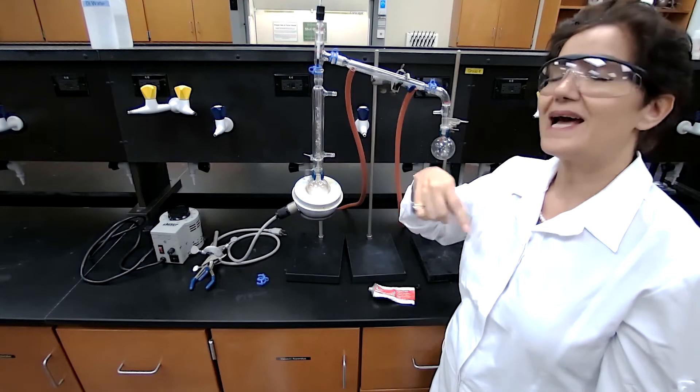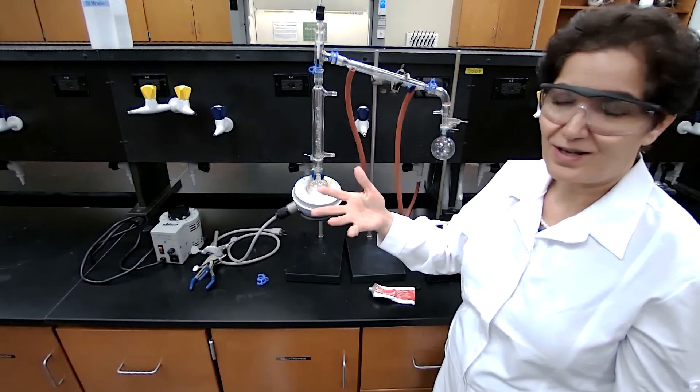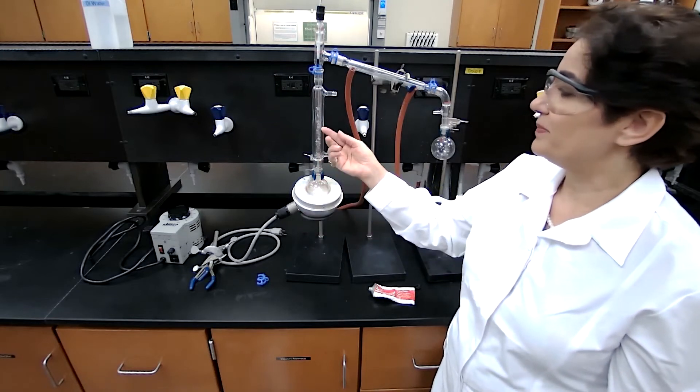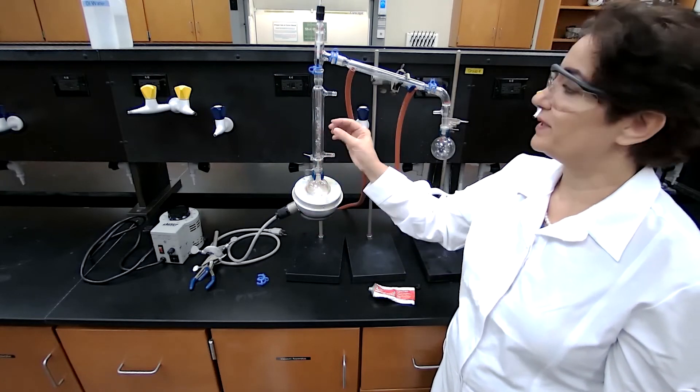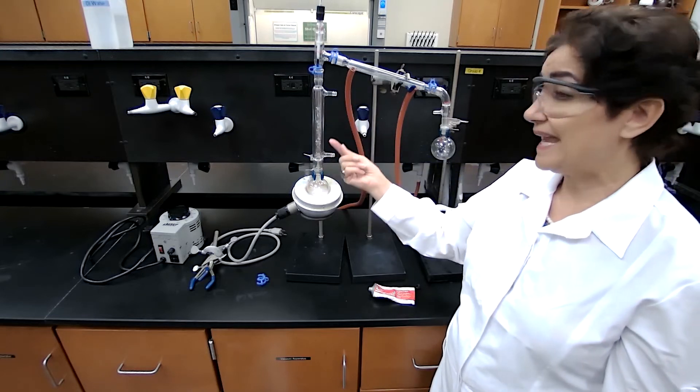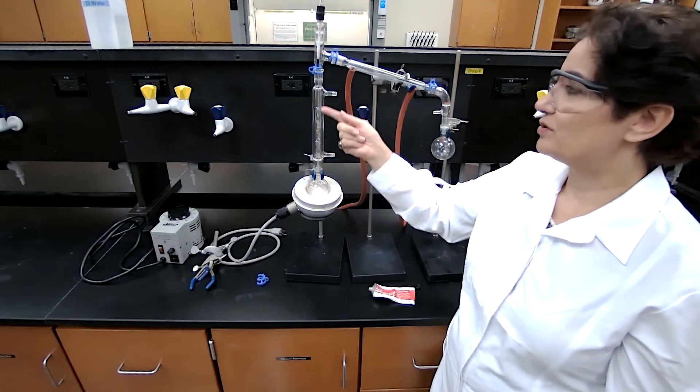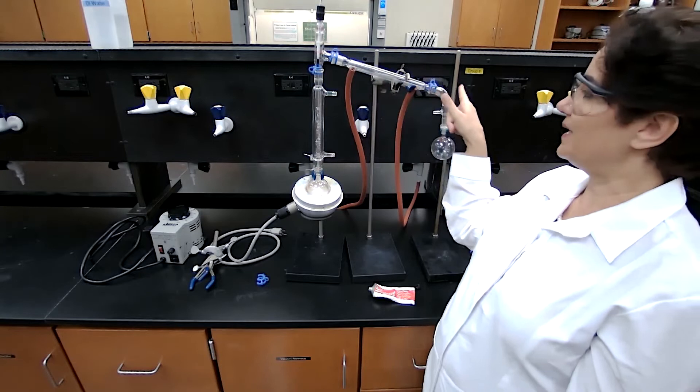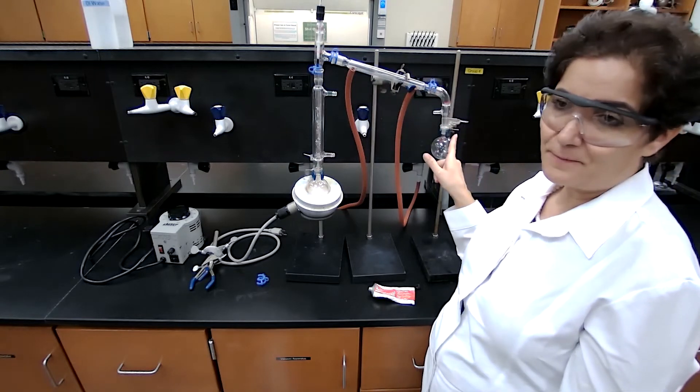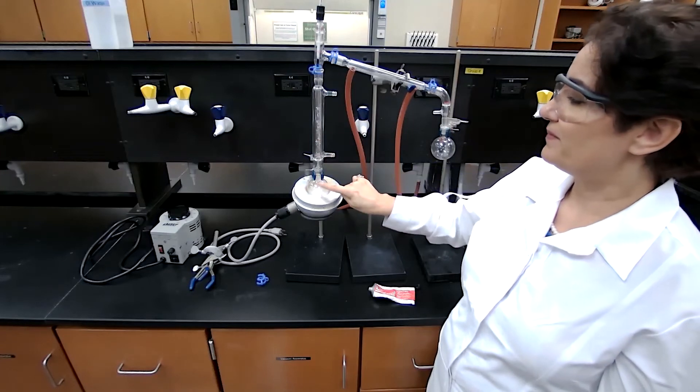Because it has higher boiling point, it would condense faster. So when compound B comes up, the higher boiling point is going to condense and it will go back. Compound A, because it has lower boiling point, will come up, survive, and will go to the distillation head and be condensed.